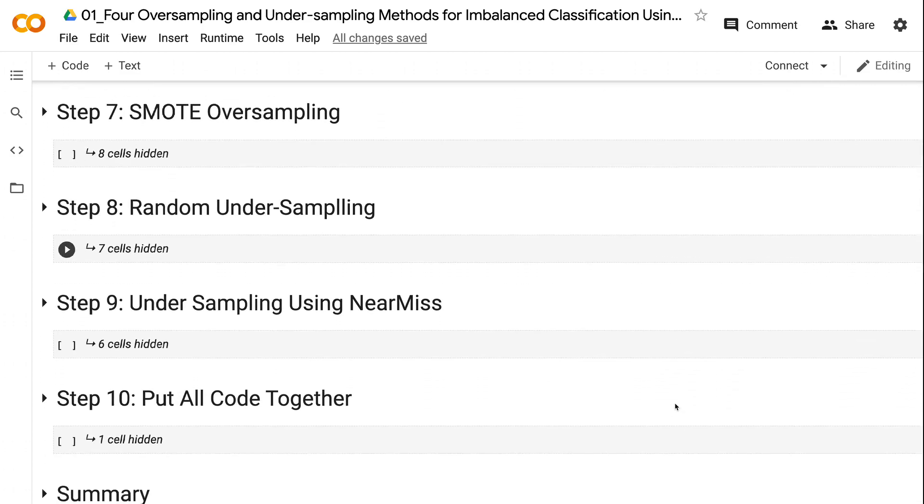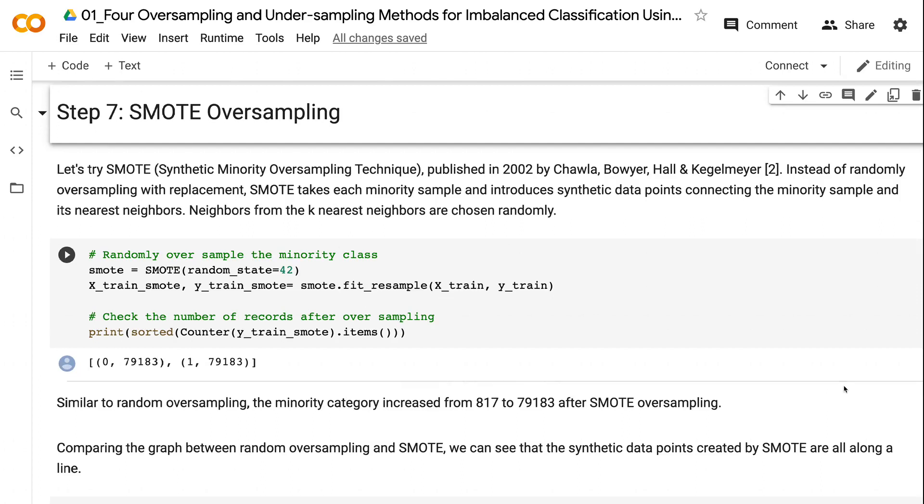Let's try SMOTE and see how it works. Instead of randomly oversampling with replacement, SMOTE takes each minority sample and introduces synthetic data points, connecting the minority sample and its nearest neighbors.